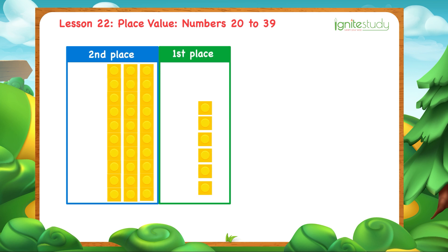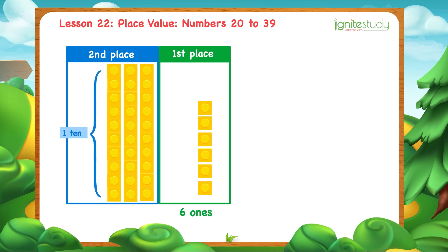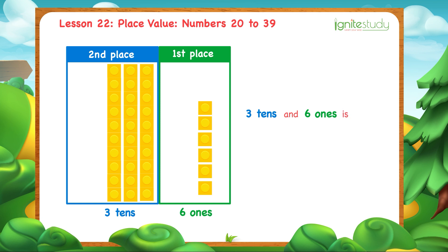No more. Look! In the first place, we have 6 ones. In the second place, as you know, each group is 1 ten. So here, we have 3 tens. As you can see, 3 tens and 6 ones is 36. Or you can see this as: 3 tens is 30, 6 ones is 6, so 30 and 6 is 36.